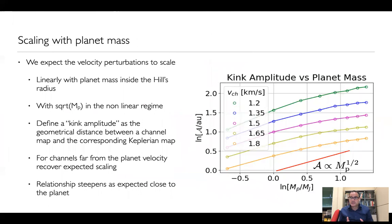Finally, we can compute how does the amplitude of the kink scale with planet mass. Here we define a kink amplitude as the geometrical distance between a given channel map and the corresponding one in the Keplerian approximation. We call this quantity A. And here I plot A as a function of planet mass for different channels. Moving from bottom to top in these various lines, we move closer and closer to the planet. The red line here shows as a reference the scaling where A is proportional to the square root of the planet mass. And indeed we see that far from the planet, the scaling goes as expected with the square root of the planet mass. But the scaling steepens as we move closer to the planet. Again, in accordance to our theoretical prediction that if we move closer to the planet, the scaling should be more linear than with the square root of the planet mass.